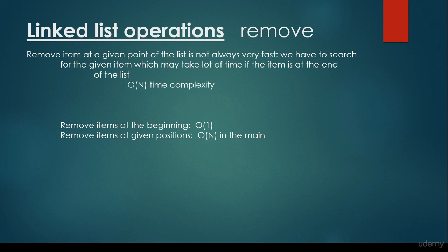It may happen that the item we would like to get rid of is at the beginning of the list — then we are lucky. But on average it's going to take O(n/2) time, and of course O(n/2) is equal to O(n). This is how Big-O notation behaves. So basically that's all about LinkedLists. It's very important to see the difference between arrays and LinkedLists. Both have some advantages as well as disadvantages, and we have to make sure that we use the proper data structure because it depends on what kind of application we would like to implement.